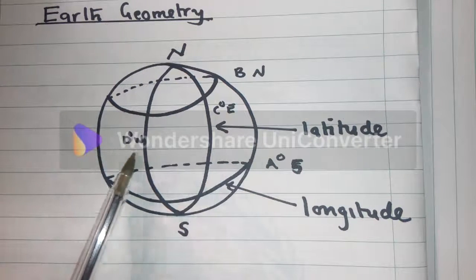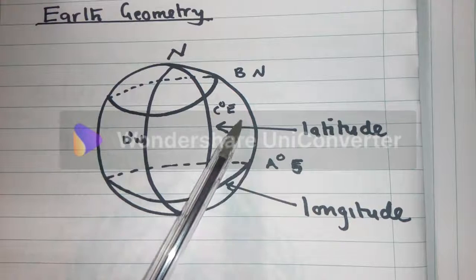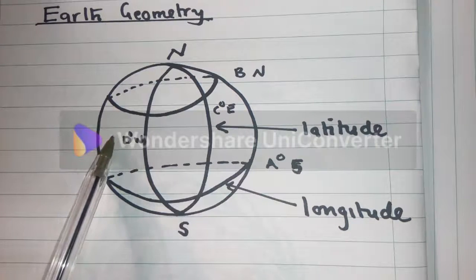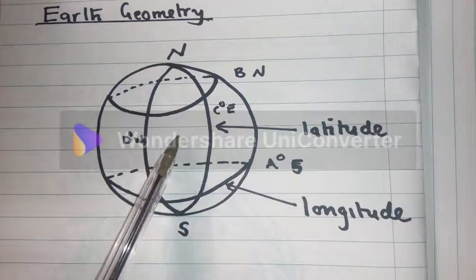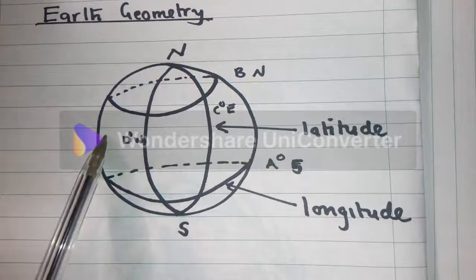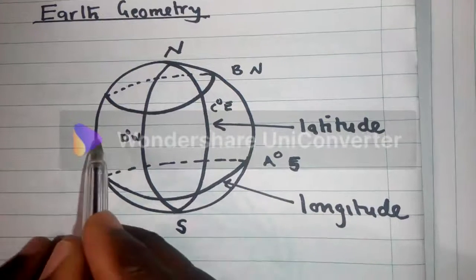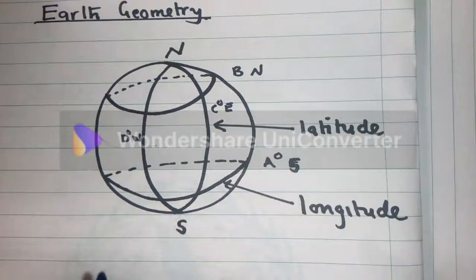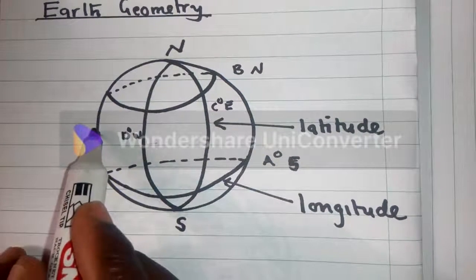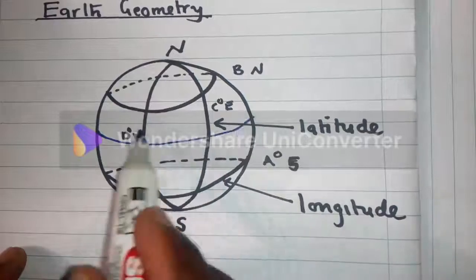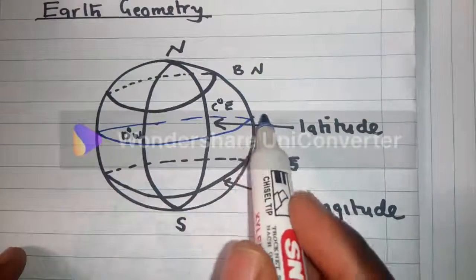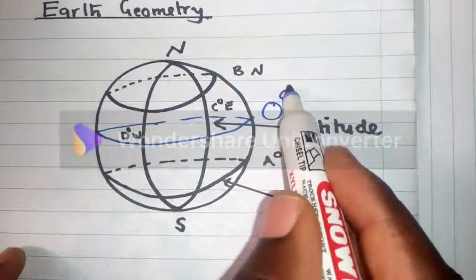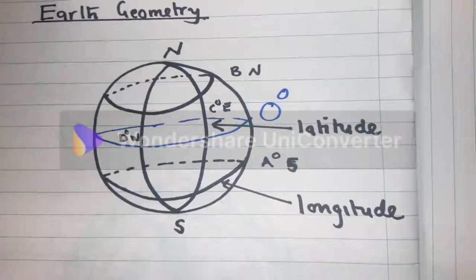So in between, there is a line or a latitude which divides the north and the south. And the line is supposed to be somewhere here. Let me use the blue. Alright, supposed to be somewhere here. So this latitude is zero degrees. It is called equator.